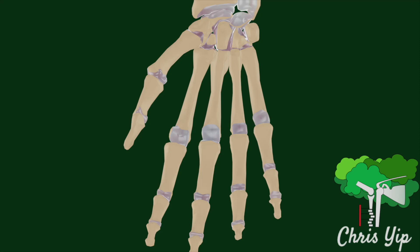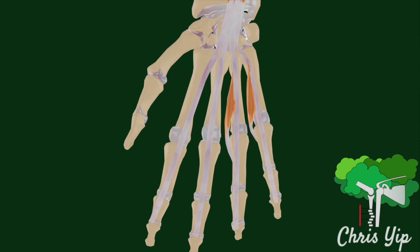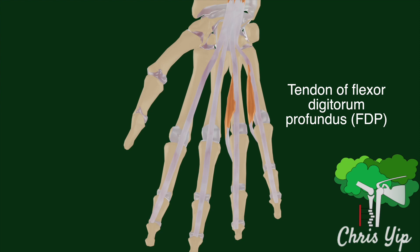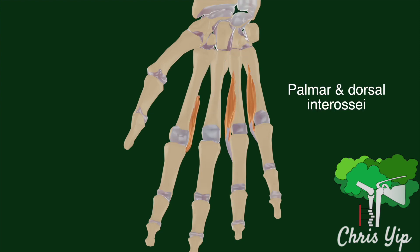The ulnar nerve supplies the third and fourth lumbricals of the hand, which originate from the tendon of the flexor digitorum profundus. The nerve also supplies the palmar and dorsal interossea.